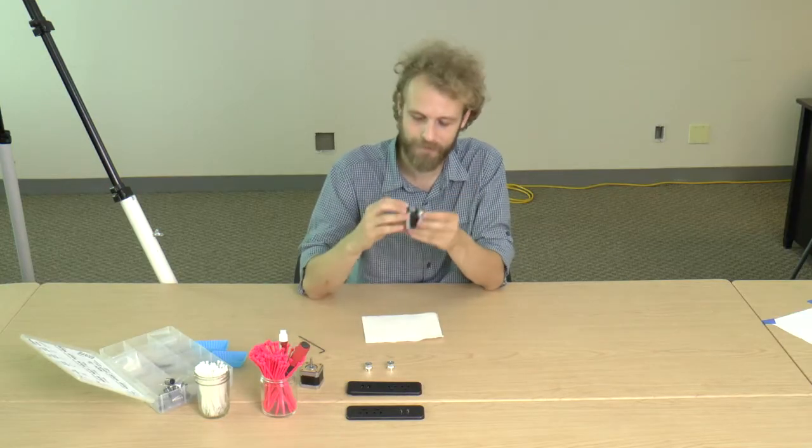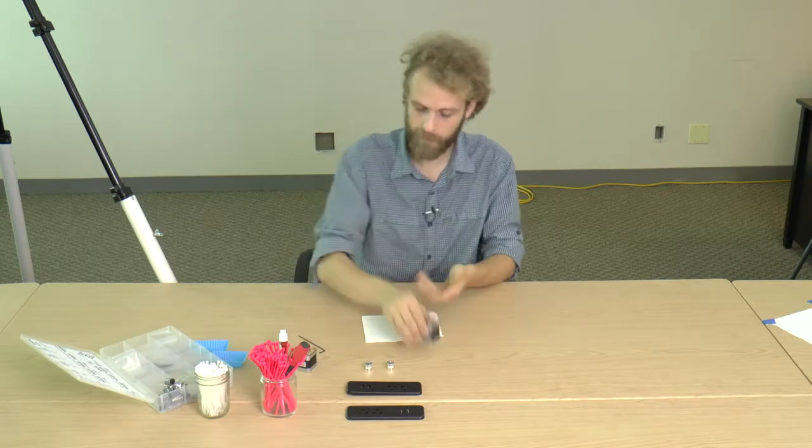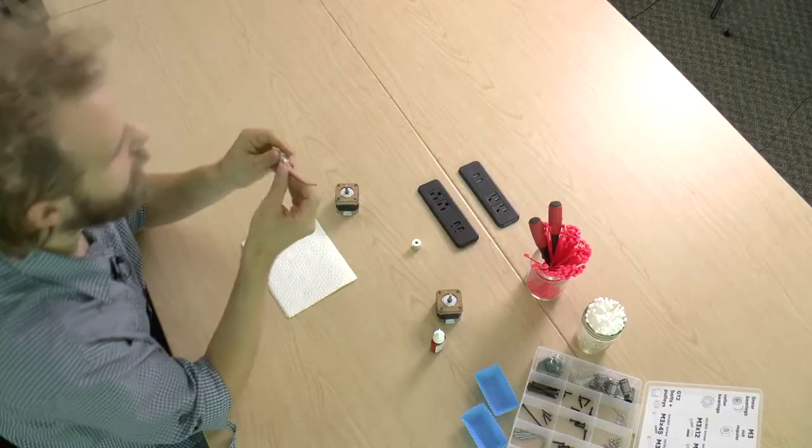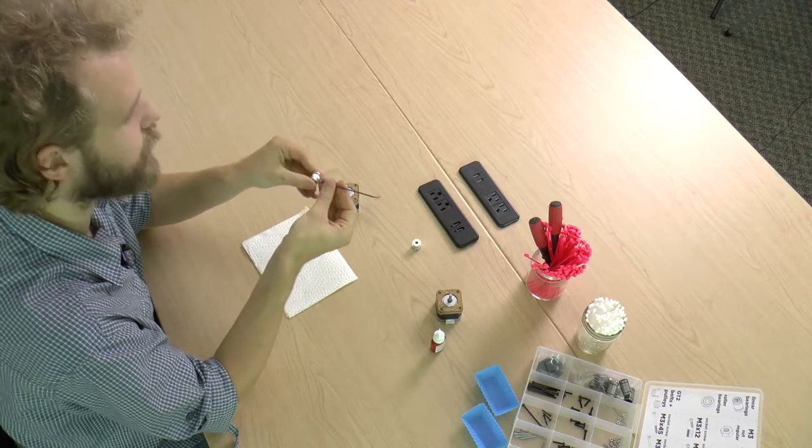Let's start with the Y motor. It has Y label on it. The belt pulleys have these tiny screws in them. They are called set screws or grub screws.